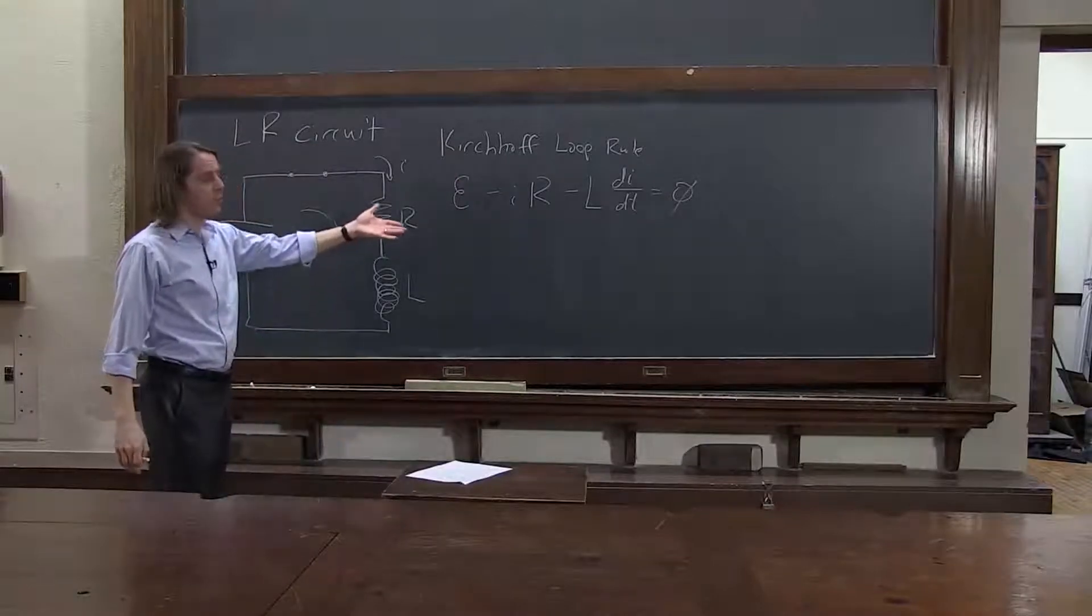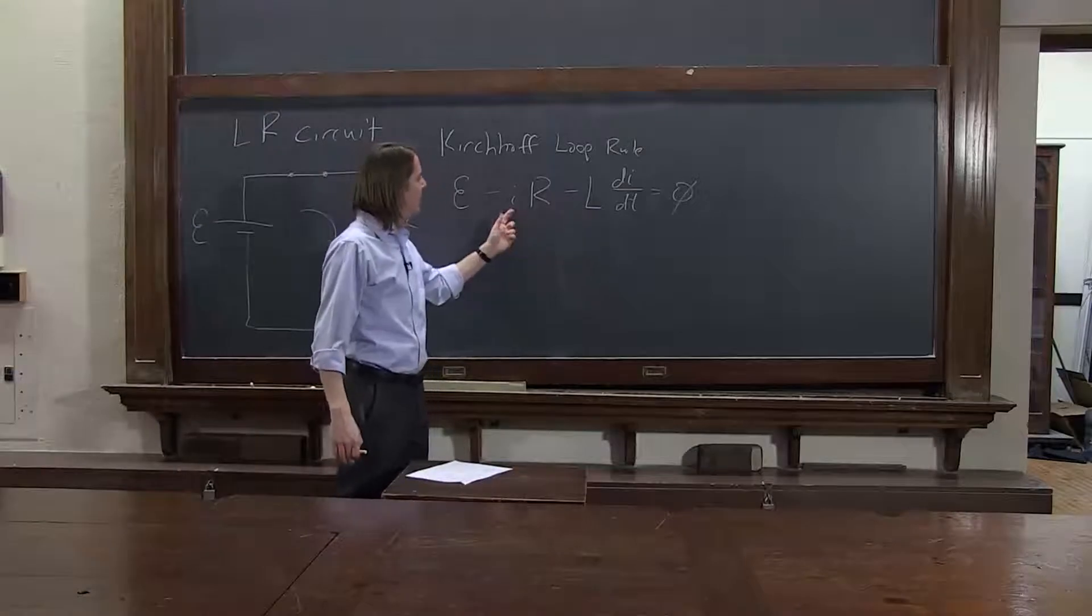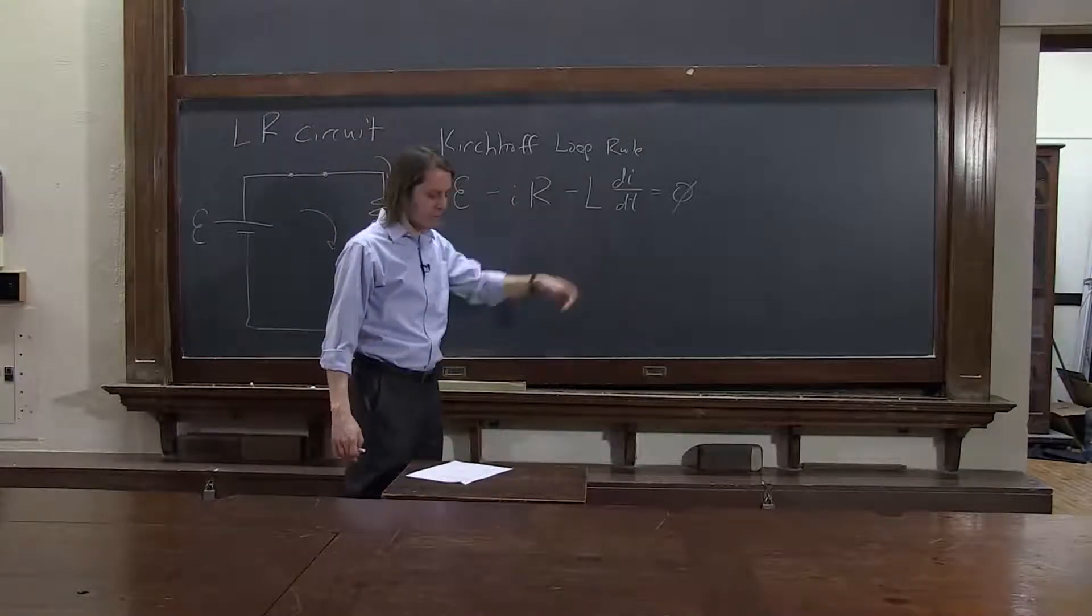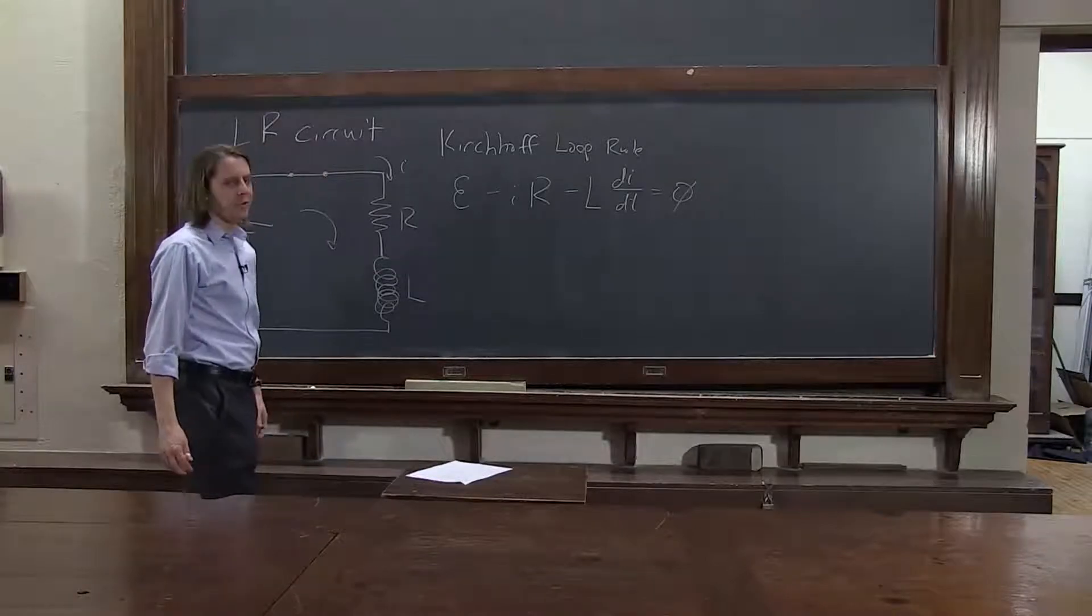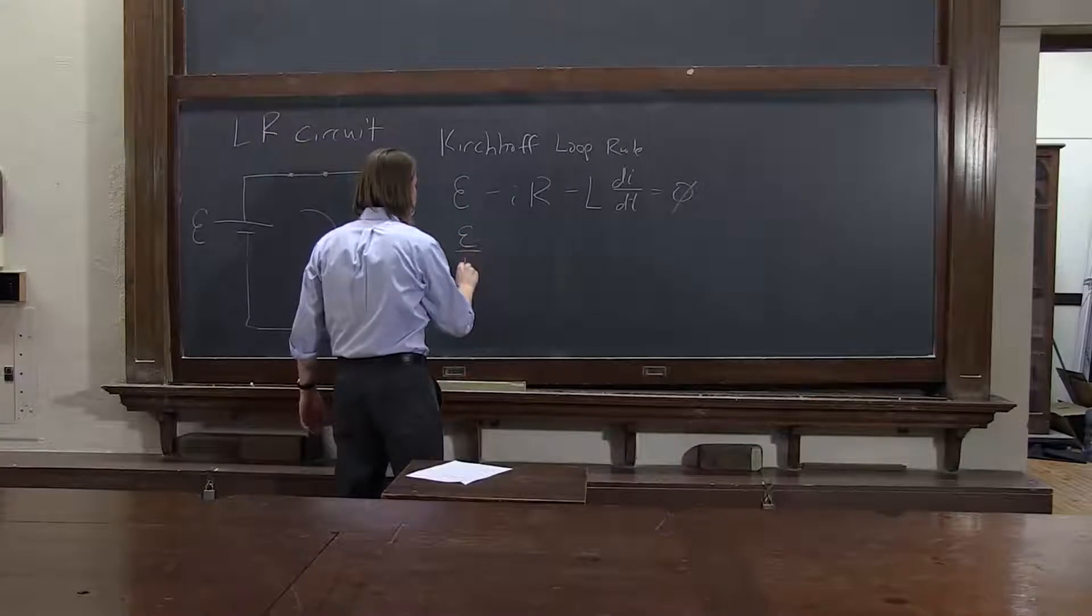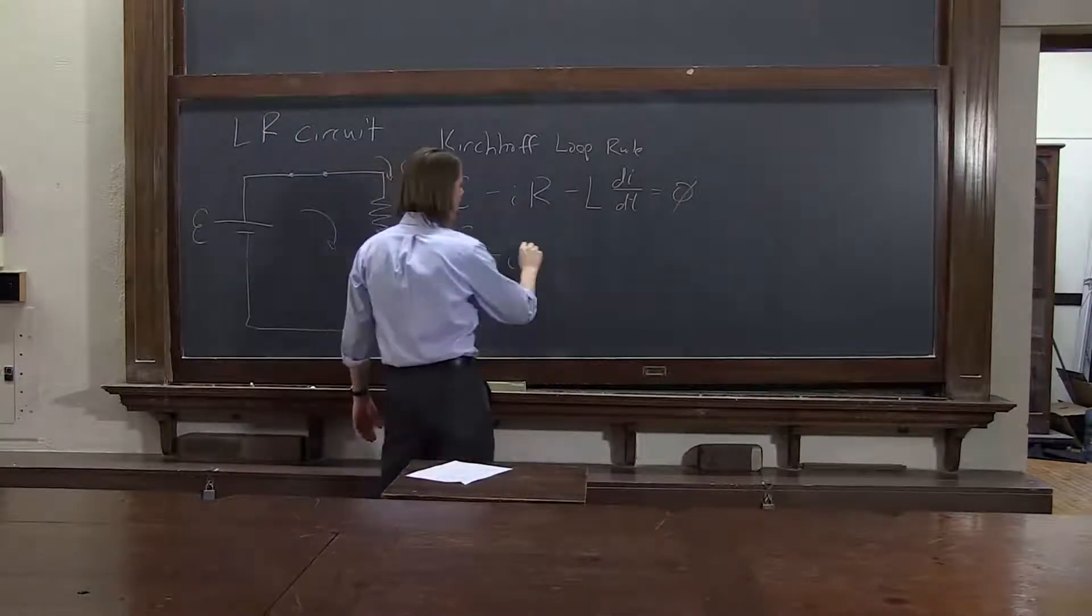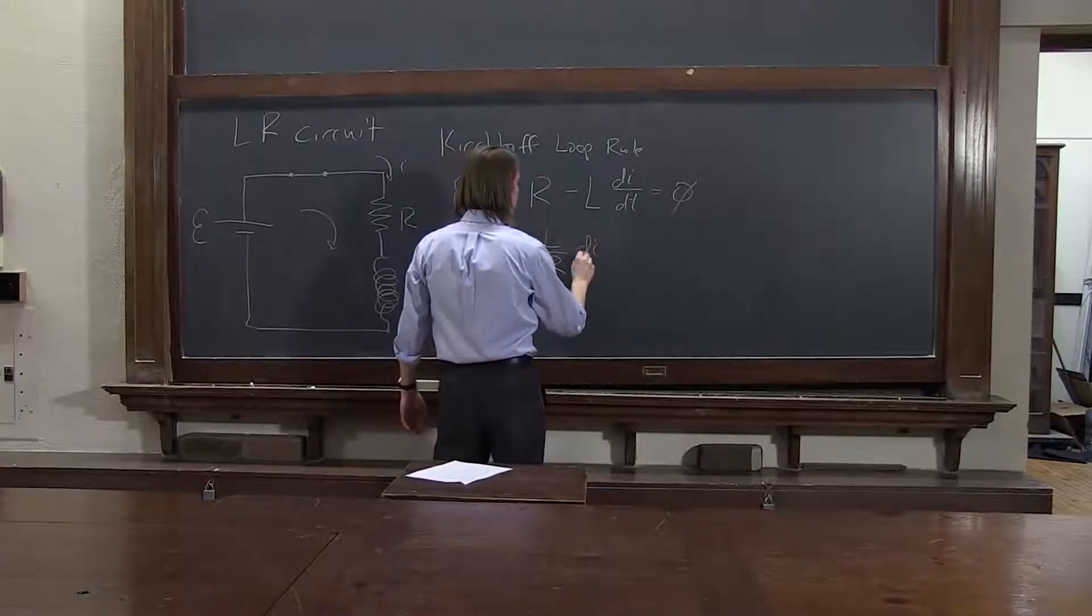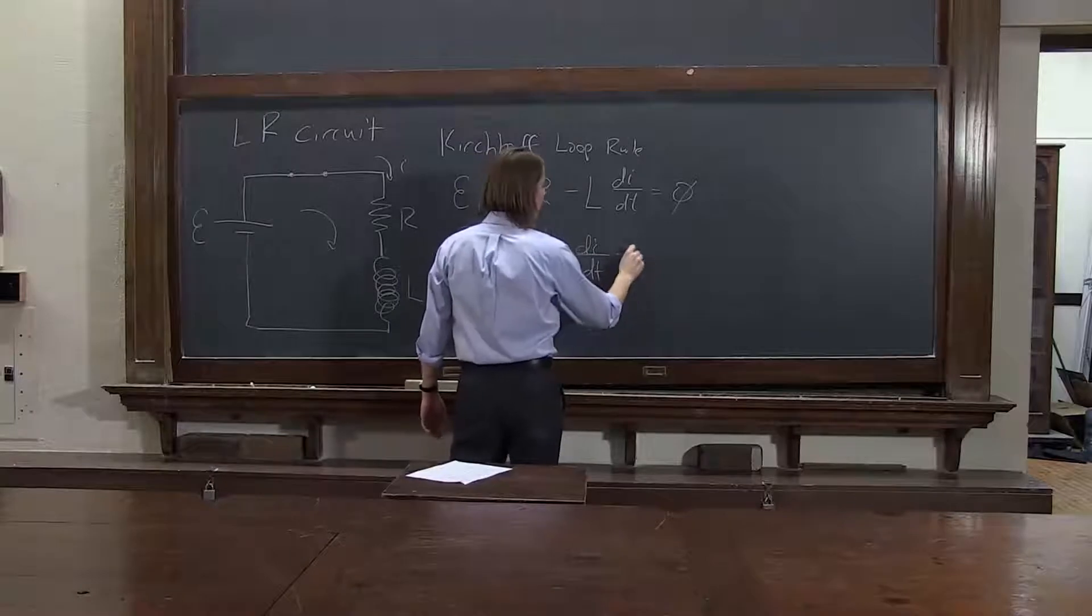So here is an equation where we need to solve for I. And it's another differential equation. We have I, current as a function of time, and we have the derivative di dt. And solving for these is always a matter of just using the right tricks. So here, let's divide by R. And using the right tricks is a matter of experience. It's minus I minus L over R di dt equals zero.